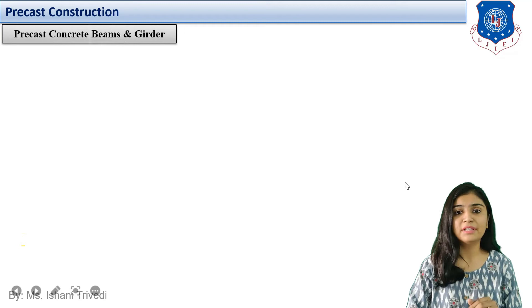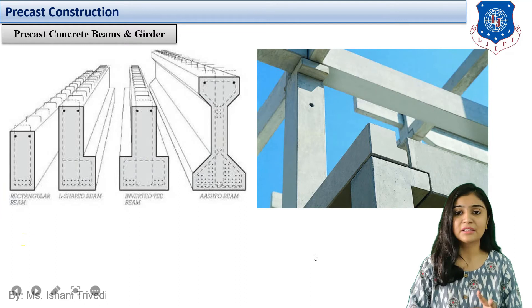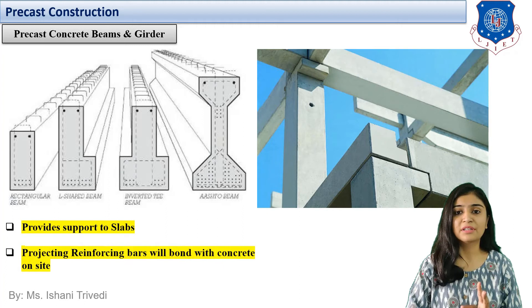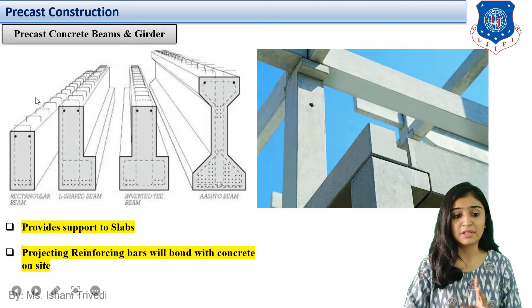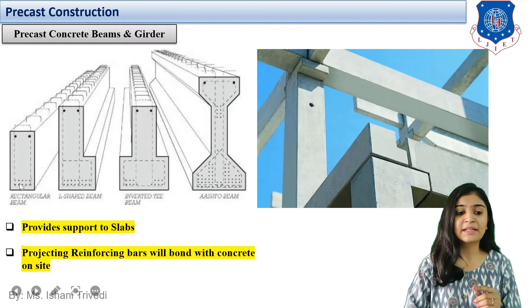Moving forward, the second category is precast concrete beams and girders. We have different shapes of beams. The first is a rectangular beam — the most simple and commonly used type in any conventional building.